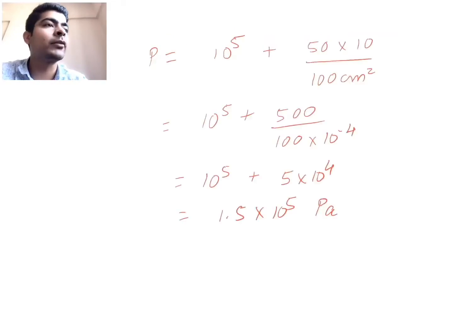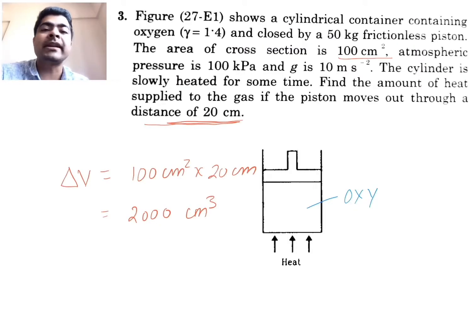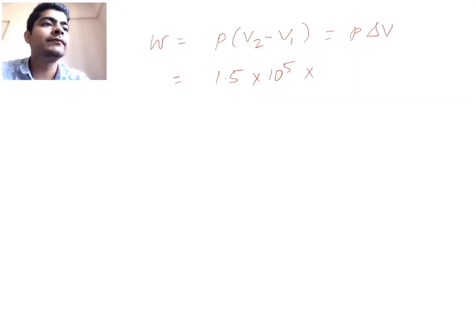So pressure is how much? 1.5 into 10 power 5 Pascal, and volume is change in volume is 2000 cm cubed, or in m cubed if I write this down, 2000 into 10 power minus 6 m cubed. So this is equal to 1.5 into 10 power 5 into 2000 into 10 power minus 6 m cubed. So I will obtain, so this will be equal to 300 joules SI units.